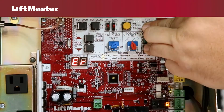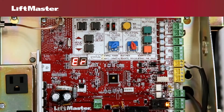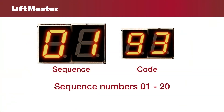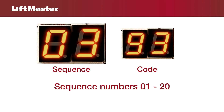The two-digit diagnostic code display will show ER and then will flash alternating between the two parts of the diagnostic code. The first part of the code is the sequence number. The operator is able to keep track of 20 diagnostic codes. The first code will display 01 for the sequence number, the second code 02, and so on.